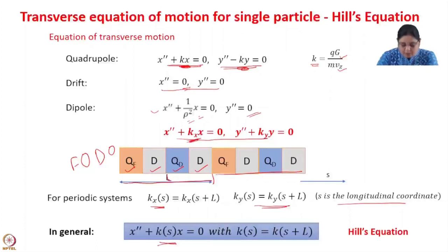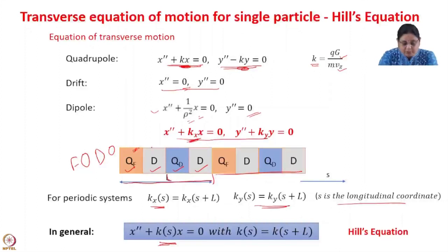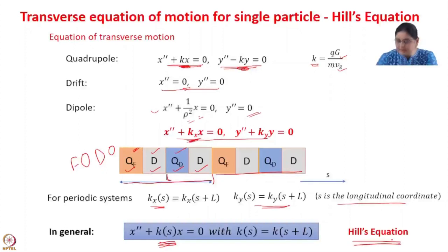In general, we can write the equation of motion for a periodic system as x'' + k(s)·x = 0, with k(s) = k(s + L), where k is now a function of s. Depending on where the charged particle is — inside a quadrupole, drift space, or defocusing quadrupole — k will take appropriate values. This equation is known as Hill's equation.